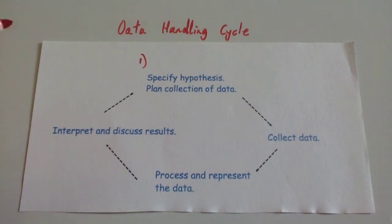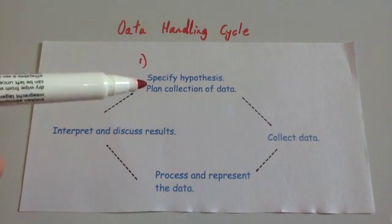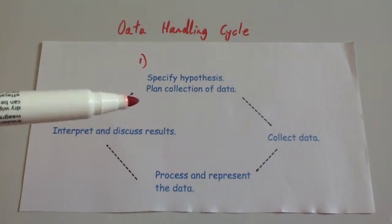It could then also be planning what calculations you're going to do. So I'm going to get 10 girls to do a reaction test, 10 boys to do a reaction test. We're going to calculate the mean for the scores, maybe draw a box and whisker diagram. Plan what the experiment's going to be, what calculations you're going to do, and really outlining what you're going to do in your investigation.